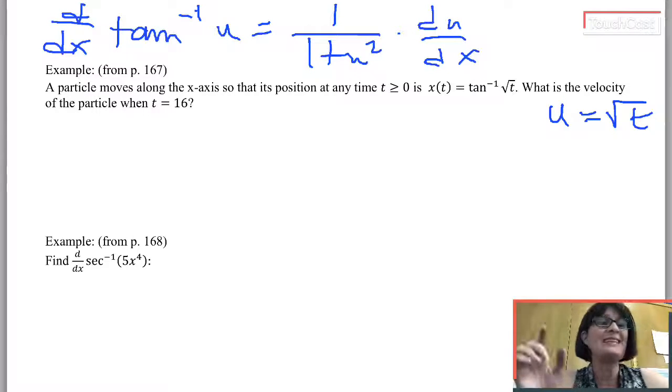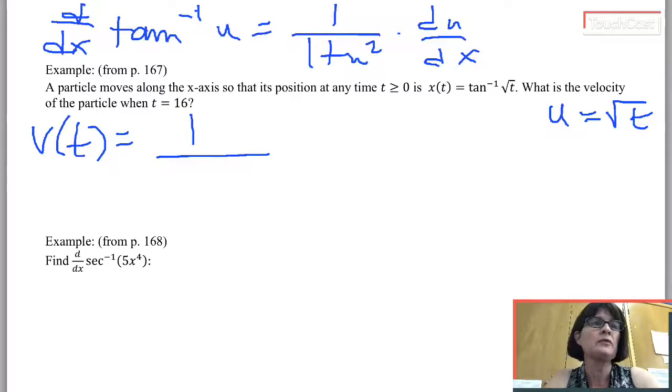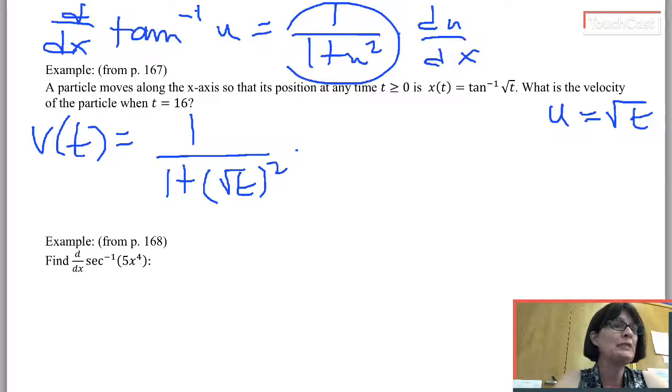And what we're going to find is dx dt, or v of t. So v of t is going to equal 1 over, so the formula says it's supposed to be 1 over 1 plus u squared, so 1 plus square root of t squared times du dt. In this case, because u is a function of t, not of x.